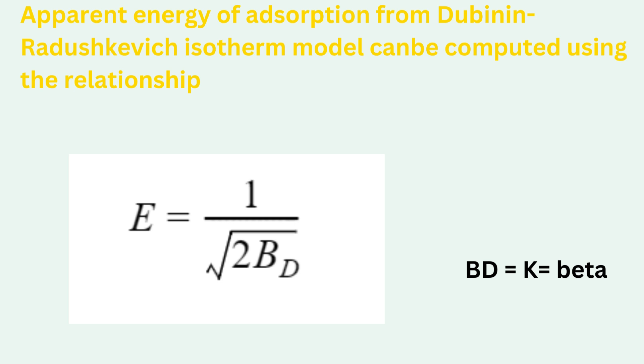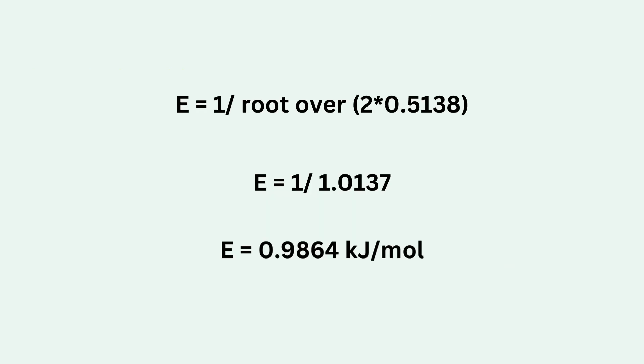The apparent adsorption energy from Dubinin-Radushkevich isotherm model can be computed using the relationship E equals 1 over square root of 2BD. If you put the value of K or BD, you get 1 divided by the square root of 2 times 0.5138. And finally, you get adsorption energy equal to 0.9864 kilojoules per mole.